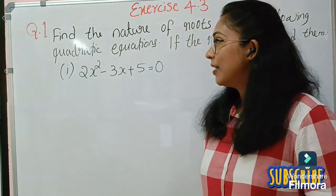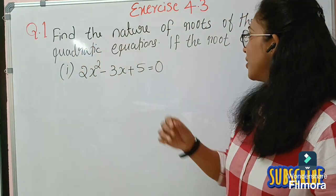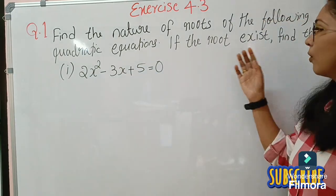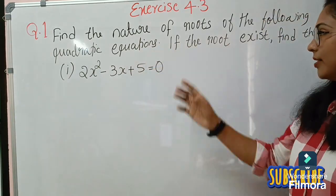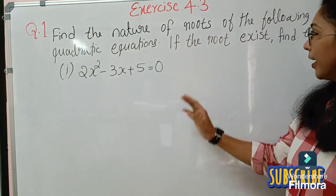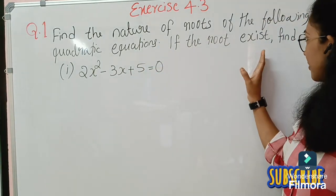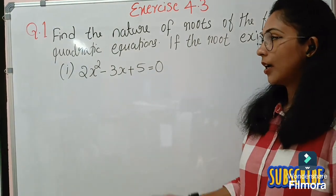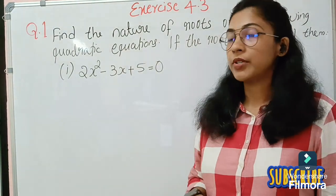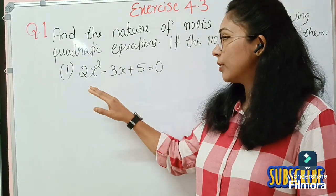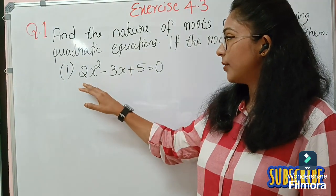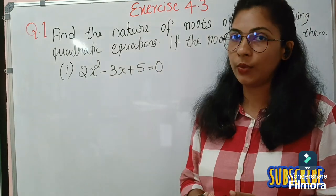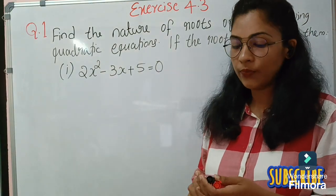The first question is: find the nature of roots of the following quadratic equations. If the root exists, find them. There are three sub-questions, and the first sub-question is 2x² minus 3x plus 5 equals 0.